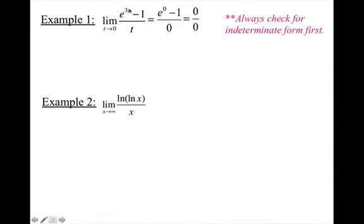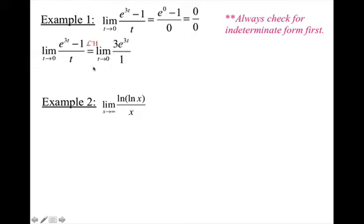So I'm going to take the derivative of the top and the derivative of the bottom. To take the derivative of the top, I use the chain rule on e^(3t), which gives me 3e^(3t) all over 1. Notice I put 'LH' above the equal sign. Now when I plug in 0 for t, I get 3.